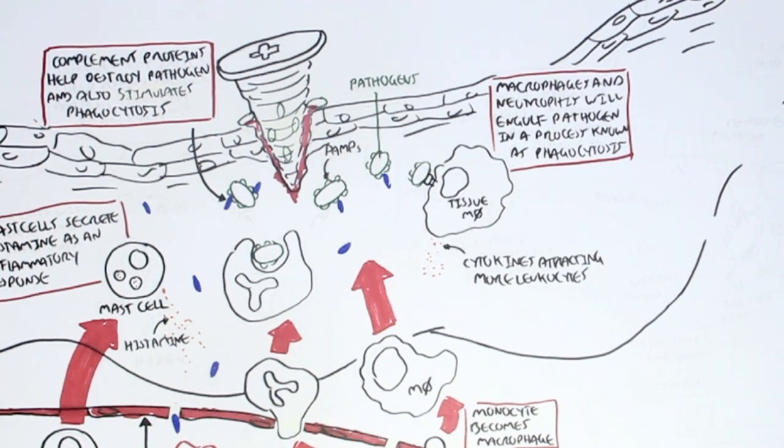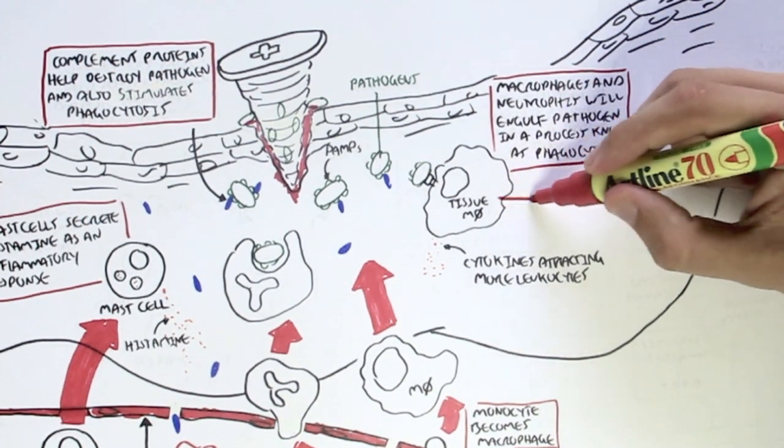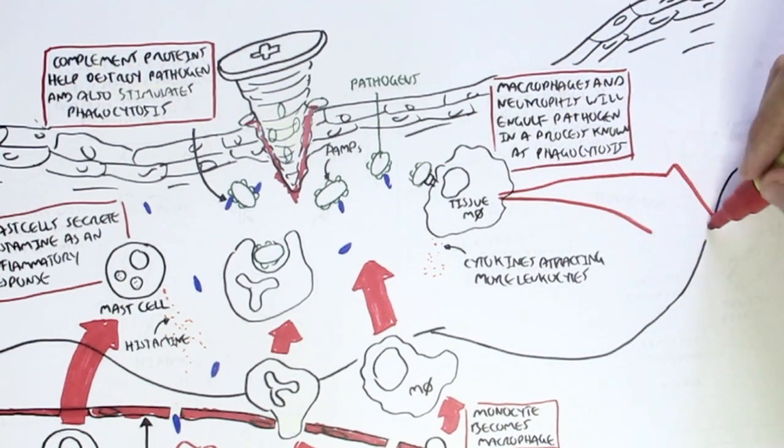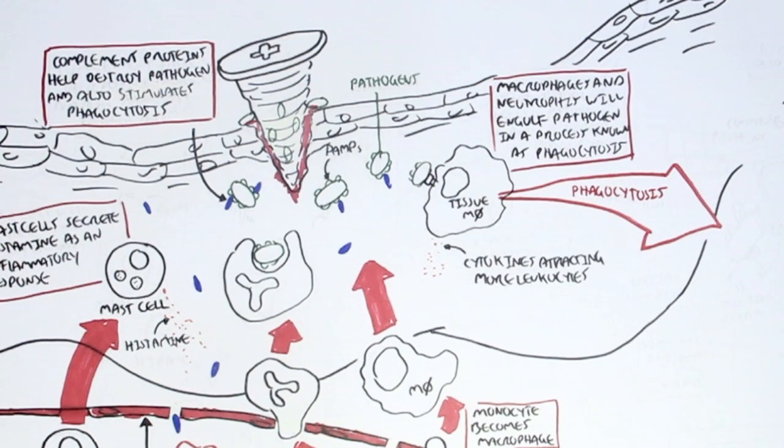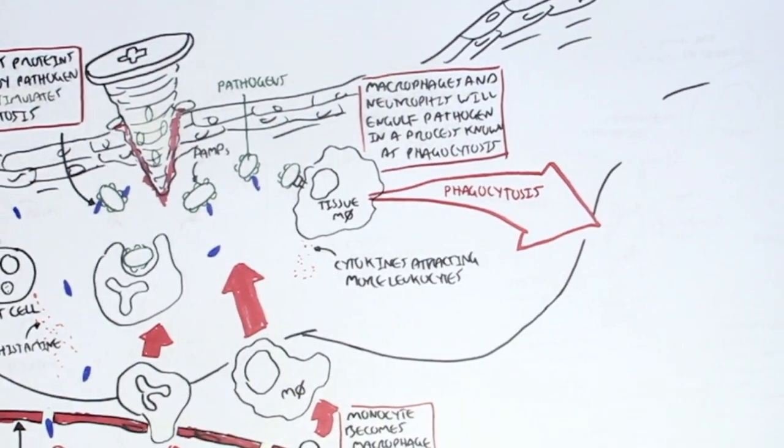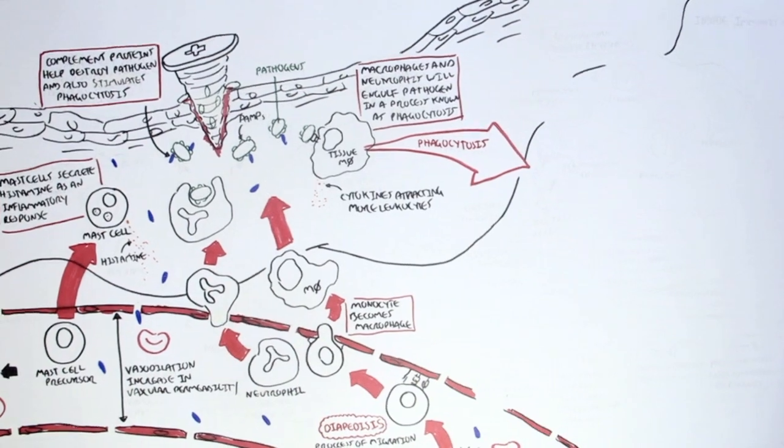Now, what is phagocytosis? The neutrophil and the macrophage does this. Phagocytosis, let's have a closer look at the tissue macrophage phagocytizing a pathogen. Because a tissue macrophage plays a critical role in that once it phagocytizes a pathogen, it will secrete cytokines to recruit more immune cells. So what happens?